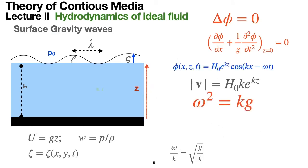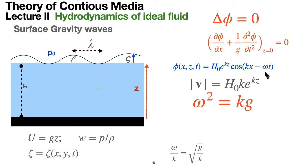Using the dispersion relation and the velocity potential, we calculate the velocity field. The x-component is proportional to a sine function and the z-component to a cosine. The velocity squared does not depend on the direction, since sine squared plus cosine squared equals one. The modulus of the velocity is a simple function, and if we solve the differential equation for the position of a fluid particle, we obtain a circle — precisely the circular motion shown on our first slide.